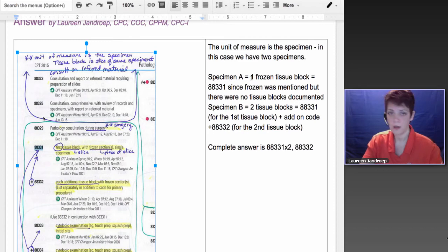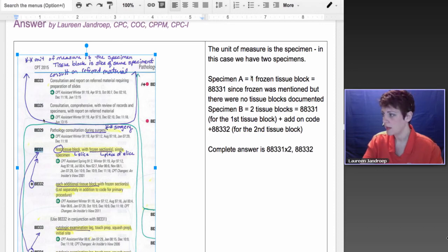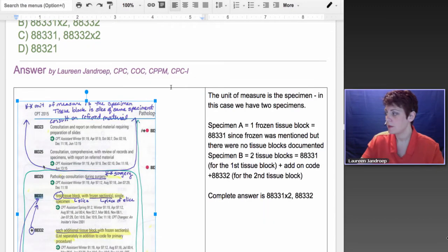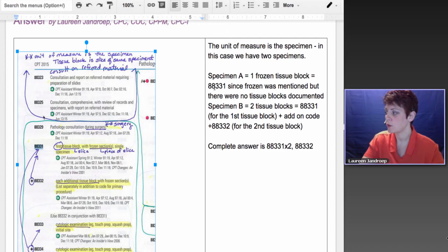So in this case, specimen A had one frozen tissue block. Let me just go back up to review that. It said during surgery to remove a malignant neoplasm of laryngeal cartilages, one frozen section is sent to confirm the adequacy of surgical margins. And then a second specimen, so we'll call this specimen B, required frozen sections on two tissue blocks. So the tissue blocks are like a slice of the specimen. So now that means specimen A is one frozen tissue block, so we're going to report 88331 for that particular specimen. It didn't mention additional slices, so we're just going to leave it at that one unit of 88331.